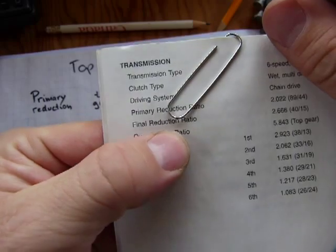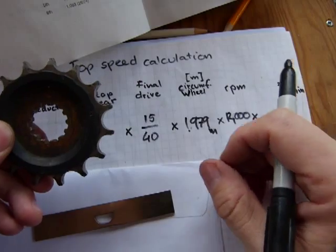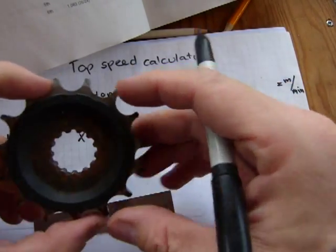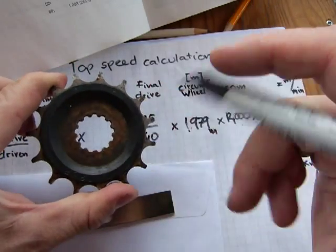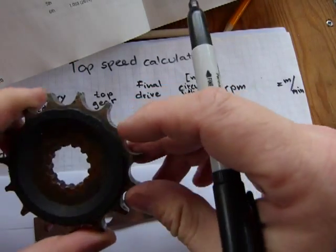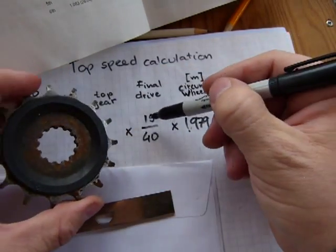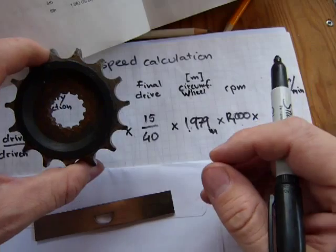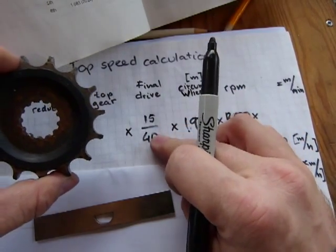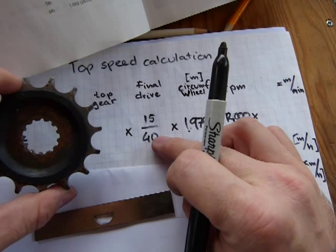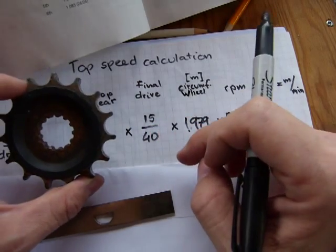It is a reduction ratio. This number means if the crankshaft or the drive shaft coming out of your gearbox turns around 15 times - maybe not 15 times, because that 15 is the number of teeth. If this turns around 10 times, the rear wheel is only going to turn around, let me see how many 15s go in 240. About two and a half or so.